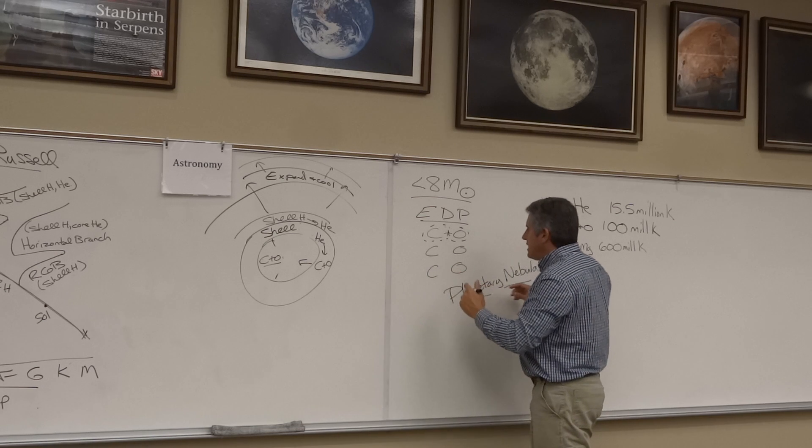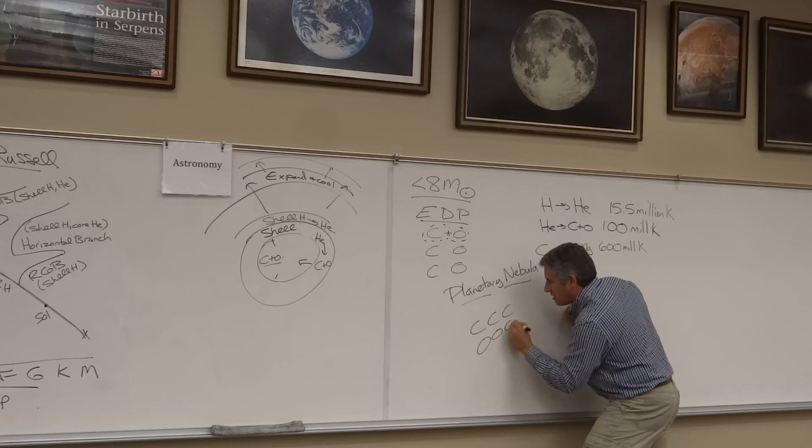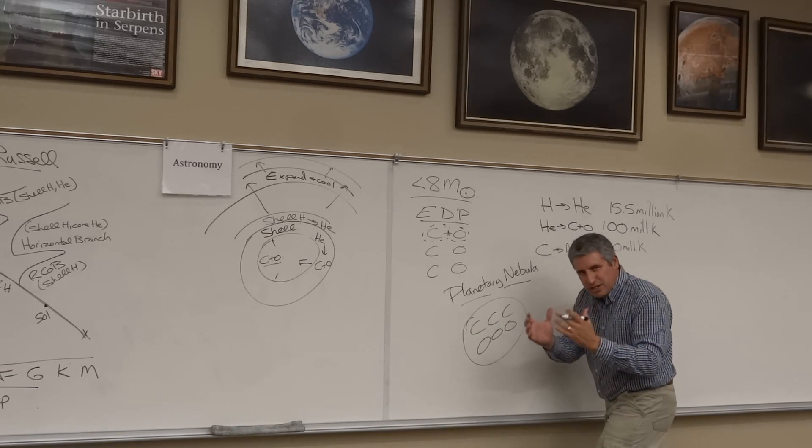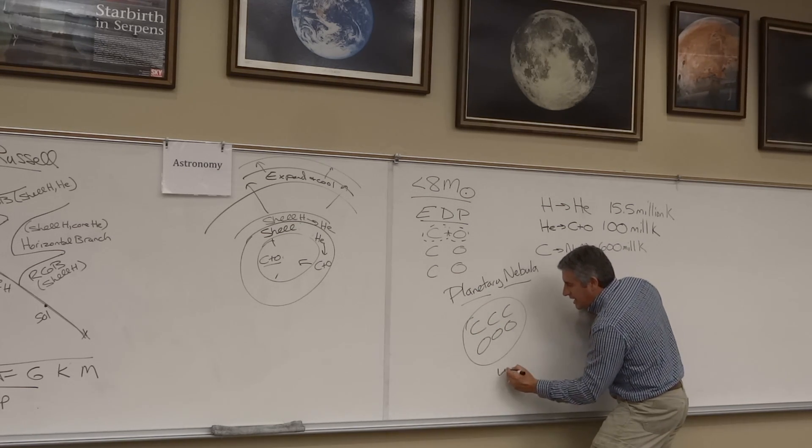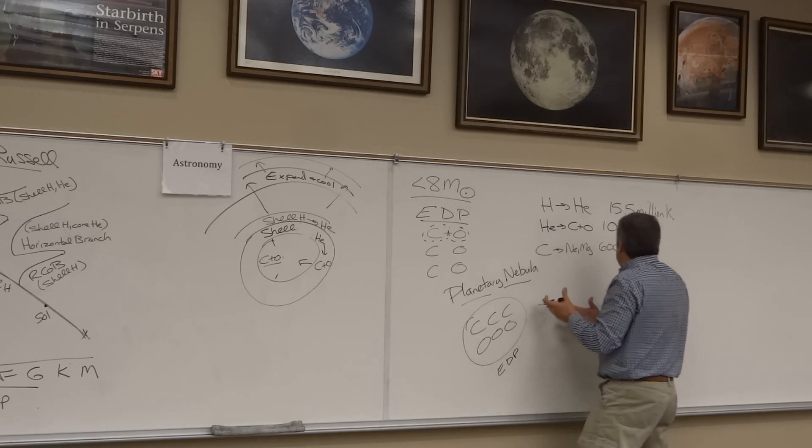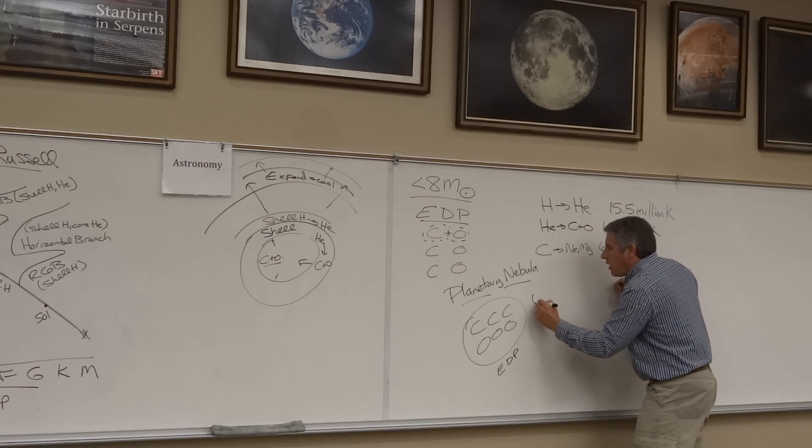And they leave behind this core of carbon and oxygen held up not by fusion pressure but by electron degeneracy pressure. We call this very hot object, this object that couldn't quite reach 600 million Kelvin, a white dwarf.